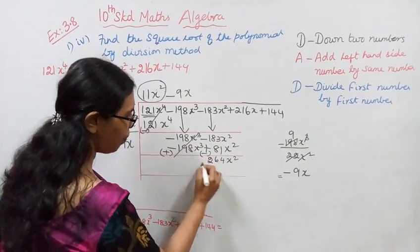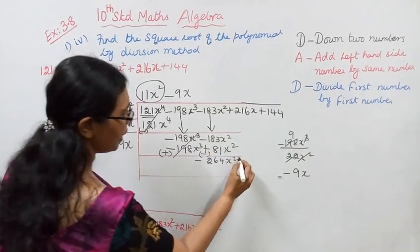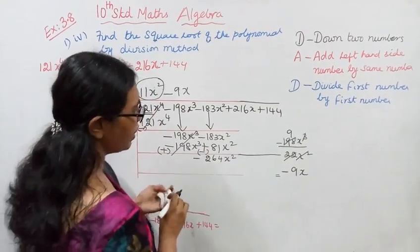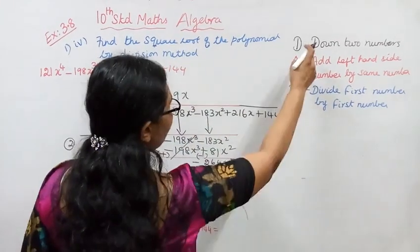Minus minus minus, add. -264x². Sign change. Minus minus is add. In the next step, follow the same procedure.